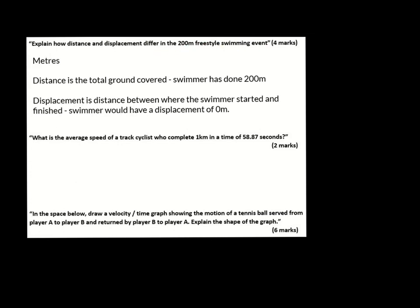Now let's look at a few exam questions on this topic. First: explain how distance and displacement differ in the 200 metre freestyle swimming event. Both are measured in metres. Distance is the total ground covered — the swimmer will have done 200 metres of distance. Displacement is the distance between where the swimmer started and finished. In a 50 metre pool, the swimmer goes up and down four times, leading to a total overall displacement of 0 metres, because they start and finish in the same position.